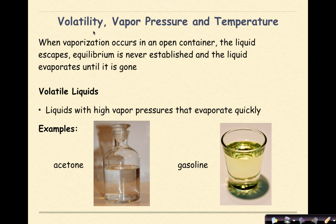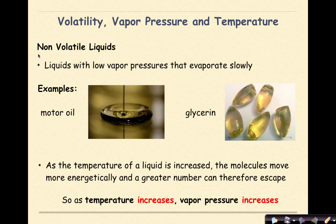Now let's talk about volatility, vapor pressure, and temperature. When vaporization occurs in an open container, the liquid escapes, equilibrium is never established, and the liquid evaporates until it's gone. Volatile liquids. These are liquids with high vapor pressures that evaporate quickly. Examples of these might be something like acetone and gasoline. We compare that to non-volatile liquids. These are liquids with low vapor pressures that evaporate slowly. So examples here might be motor oil or glycerin.